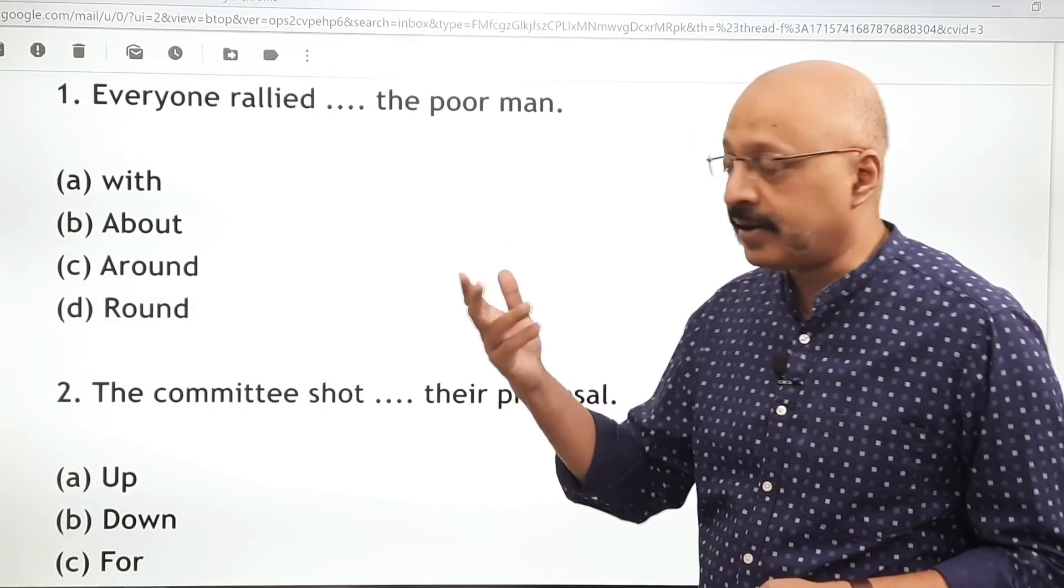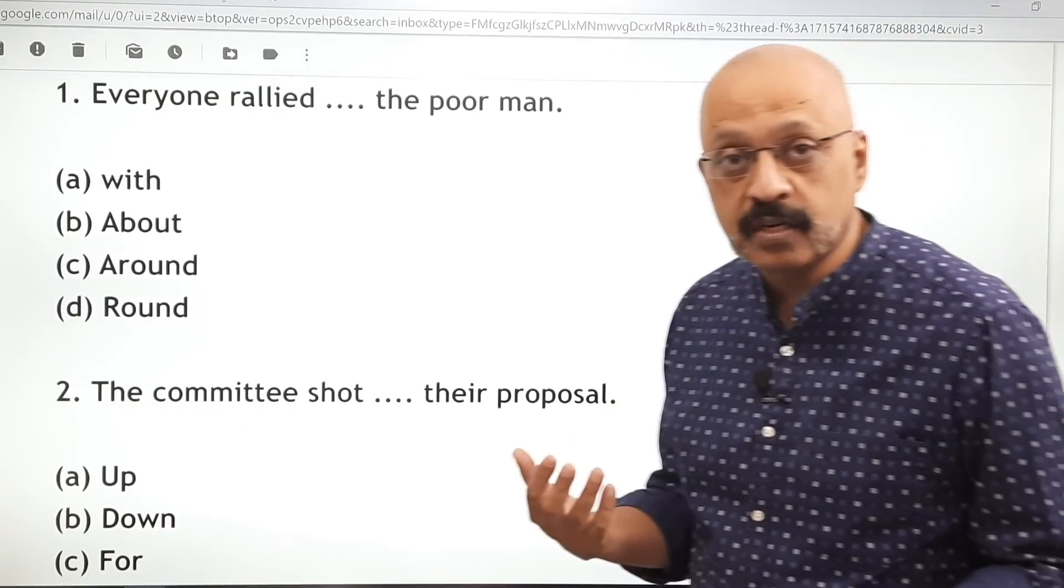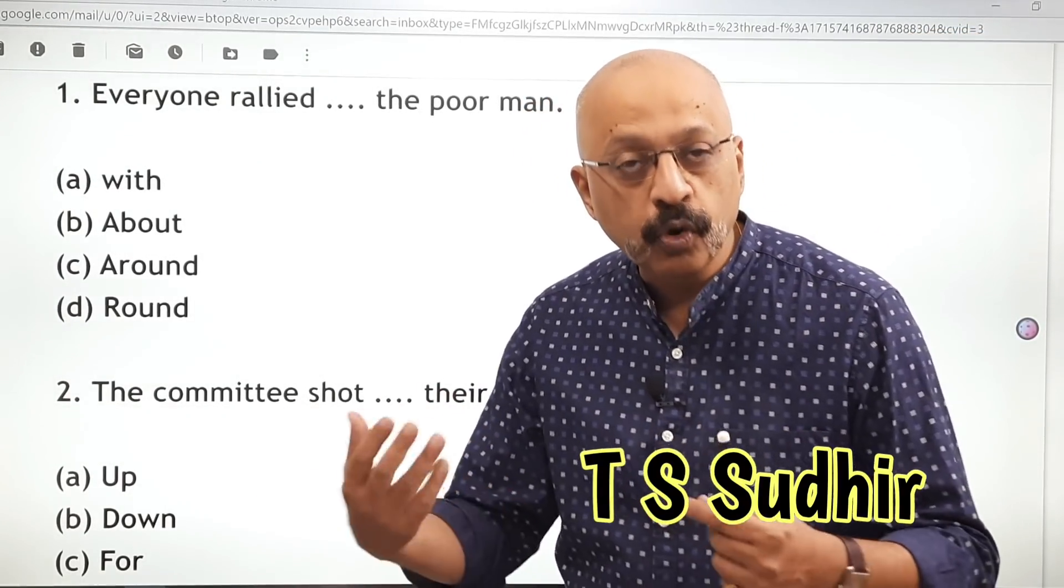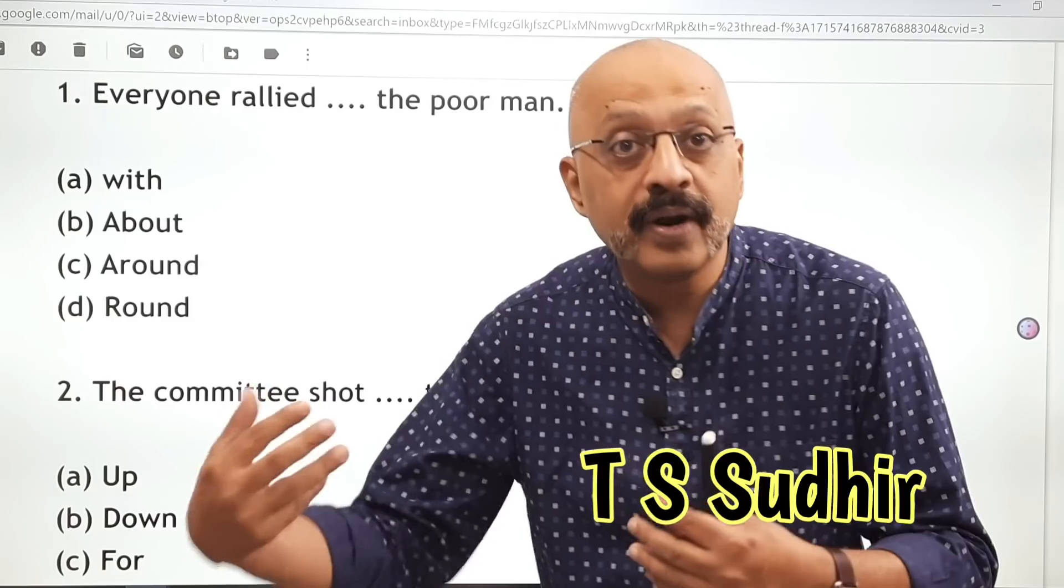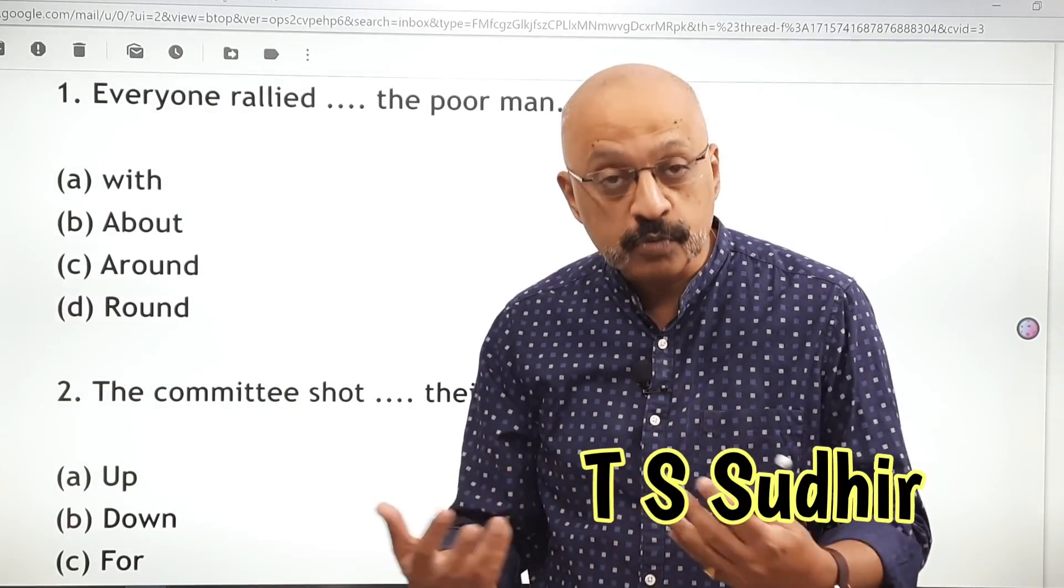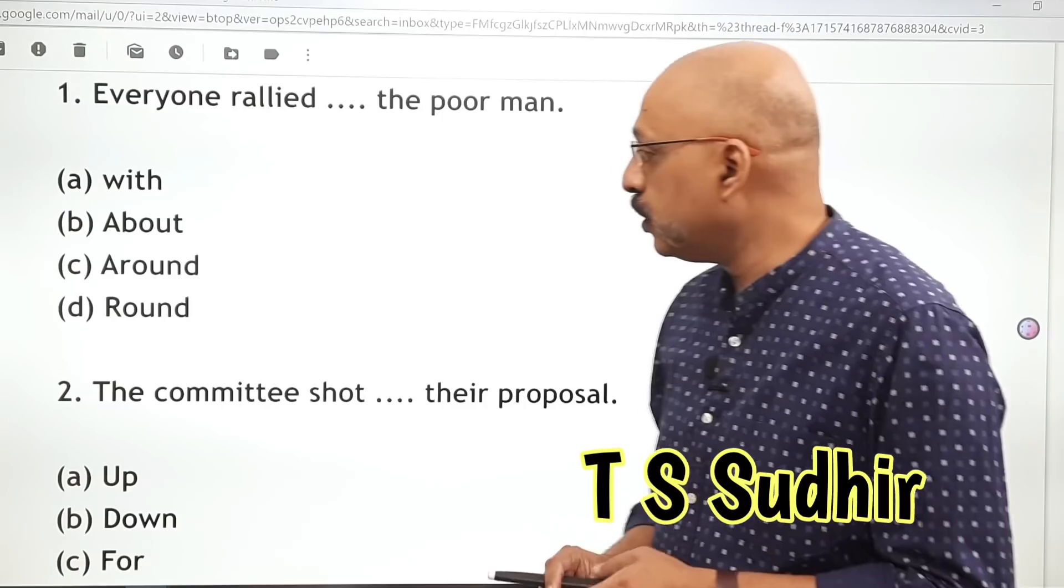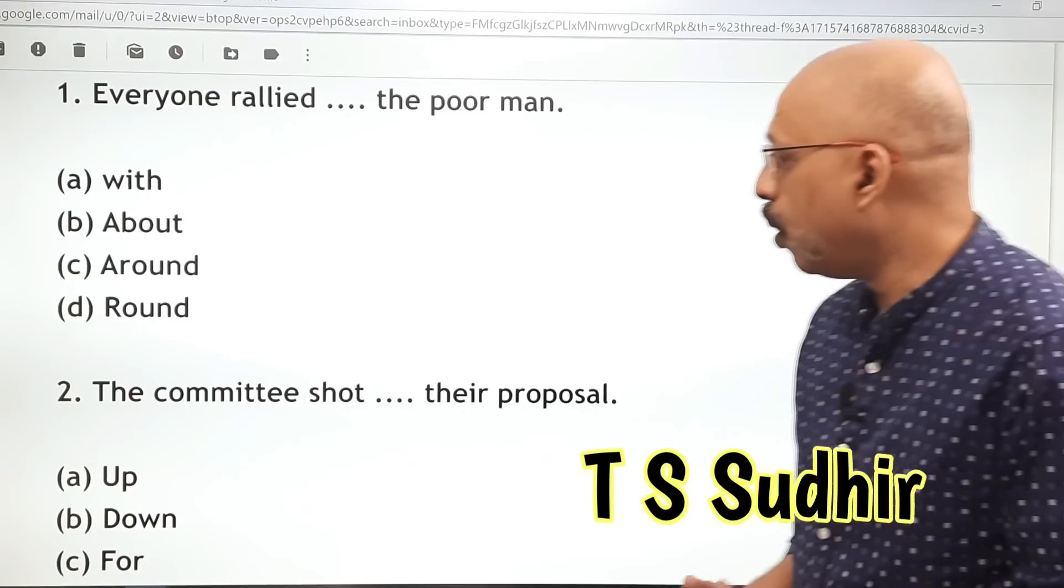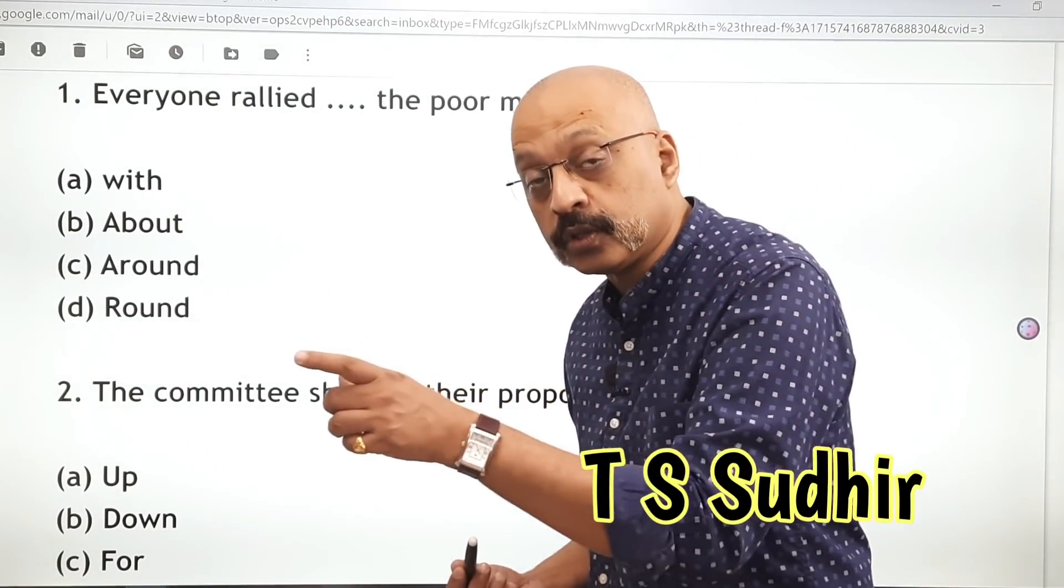Let's look at it. Everyone rallied dash the poor man. What does it mean? Rallied means in support. In support, the poor man did not have many people but everyone actually rallied. So the preposition that will be used will be around. You know, everyone rallied in support of the poor man.